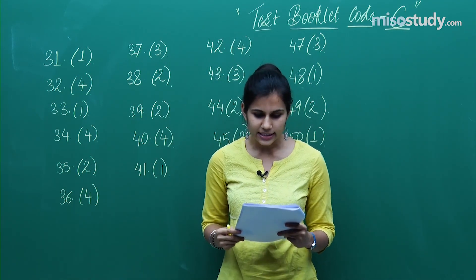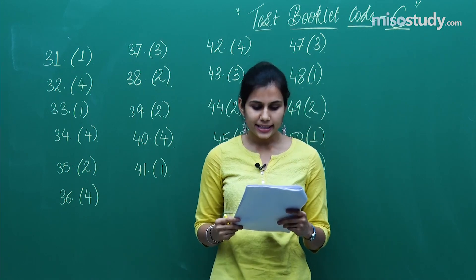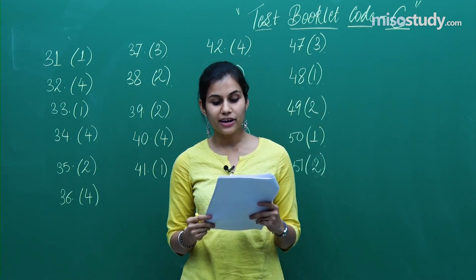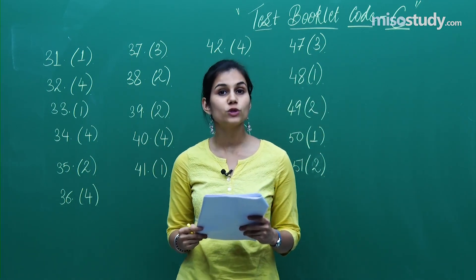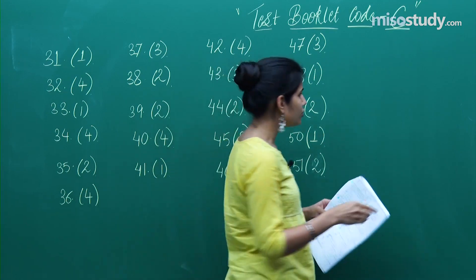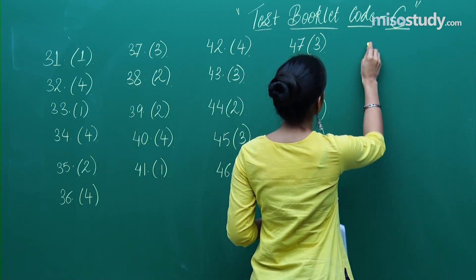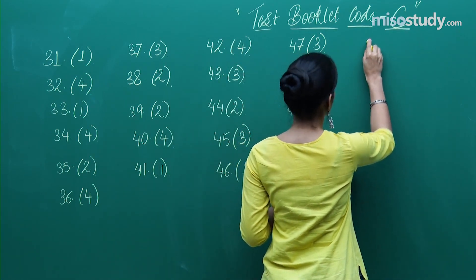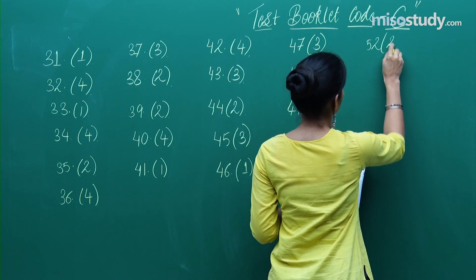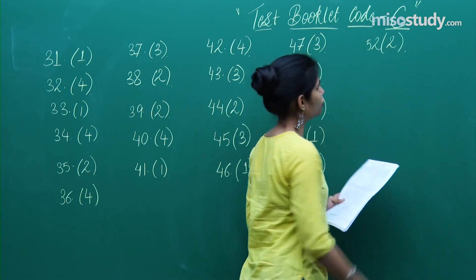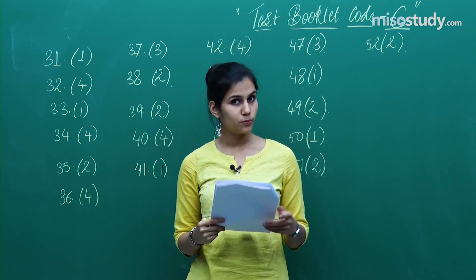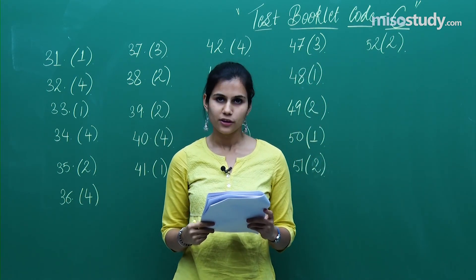Question 52: the correct answer to this question is 3√5/√2, which happens to be the second option. So question 52, second option is the correct one.